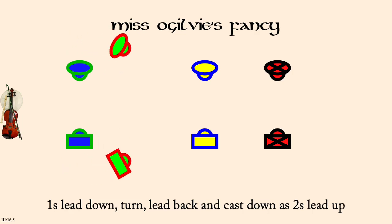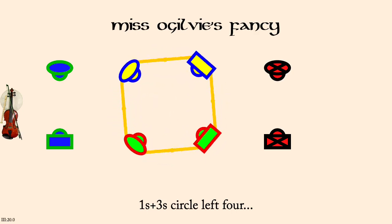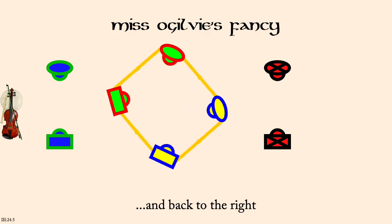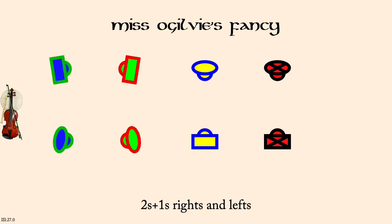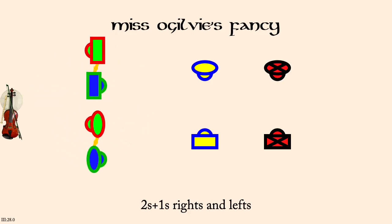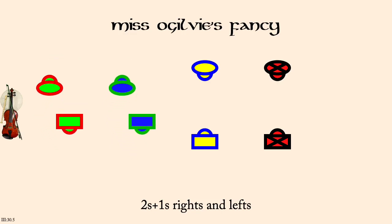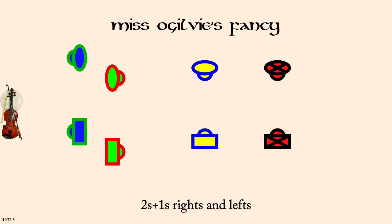Once in threes, circle left, four. And back to the right. Ones and twos, Diamond Pousset.